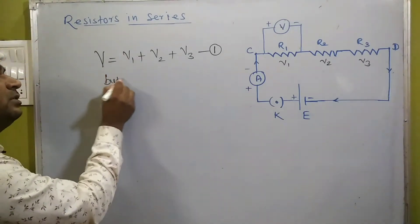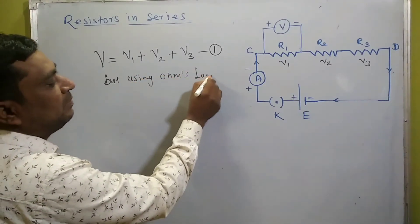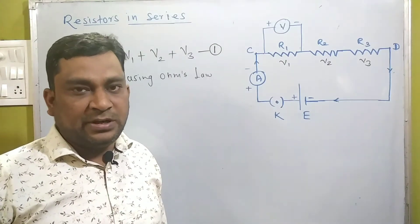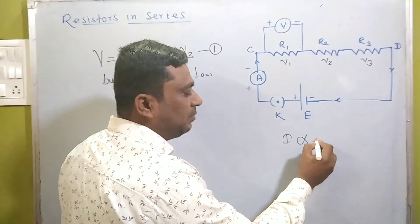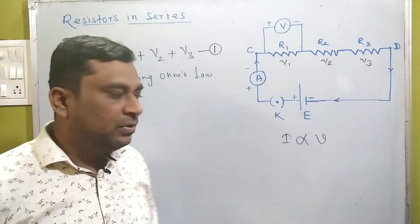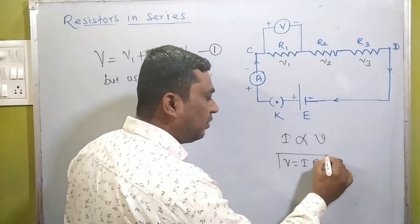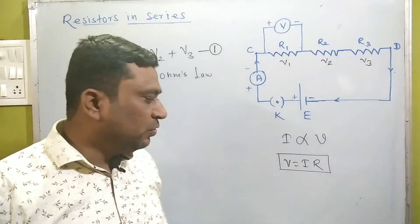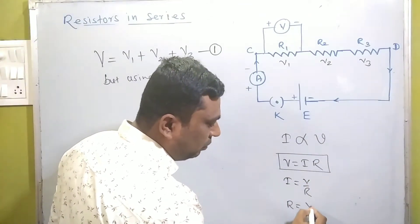Using Ohm's Law: if the physical state of the conductor remains constant, the current flowing through a conductor is directly proportional to the potential difference applied across its two ends. In short, we can write V equals IR, where R is the proportionality constant. So V equals IR, or I equals V over R, or R equals V over I.